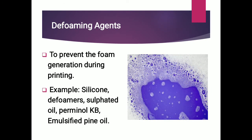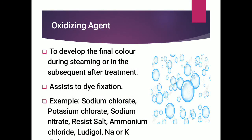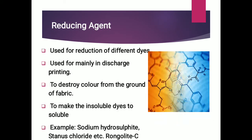Deforming agent is used to prevent foam generation during printing. Examples include silicone deformer and sulfonated oil. Some oxidizing agents may be used to develop the final color during the steaming process or in the subsequent after treatment process; it assists dye fixation. Examples include sodium chlorate, potassium chlorate, sodium nitrate, and acid salt.